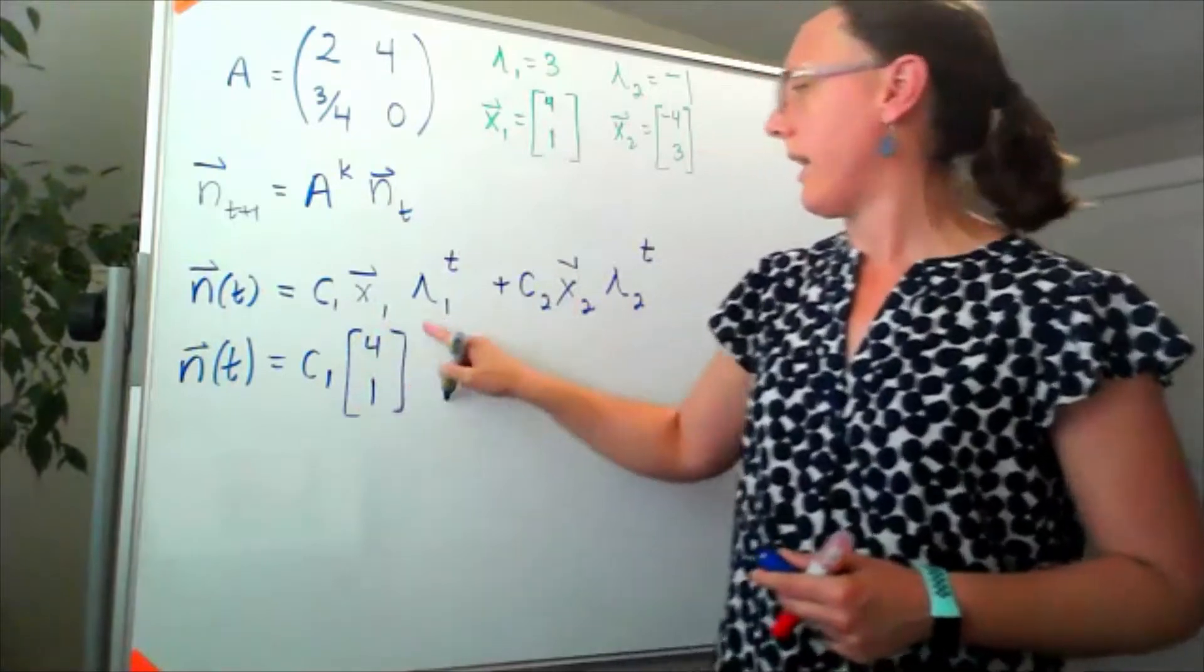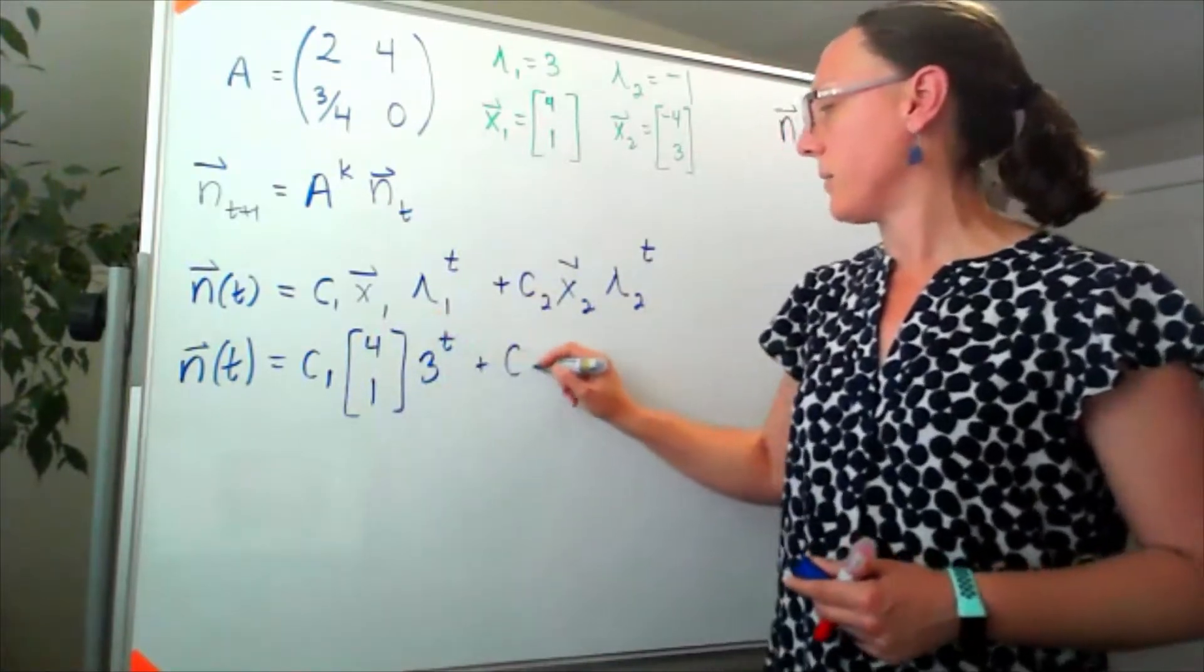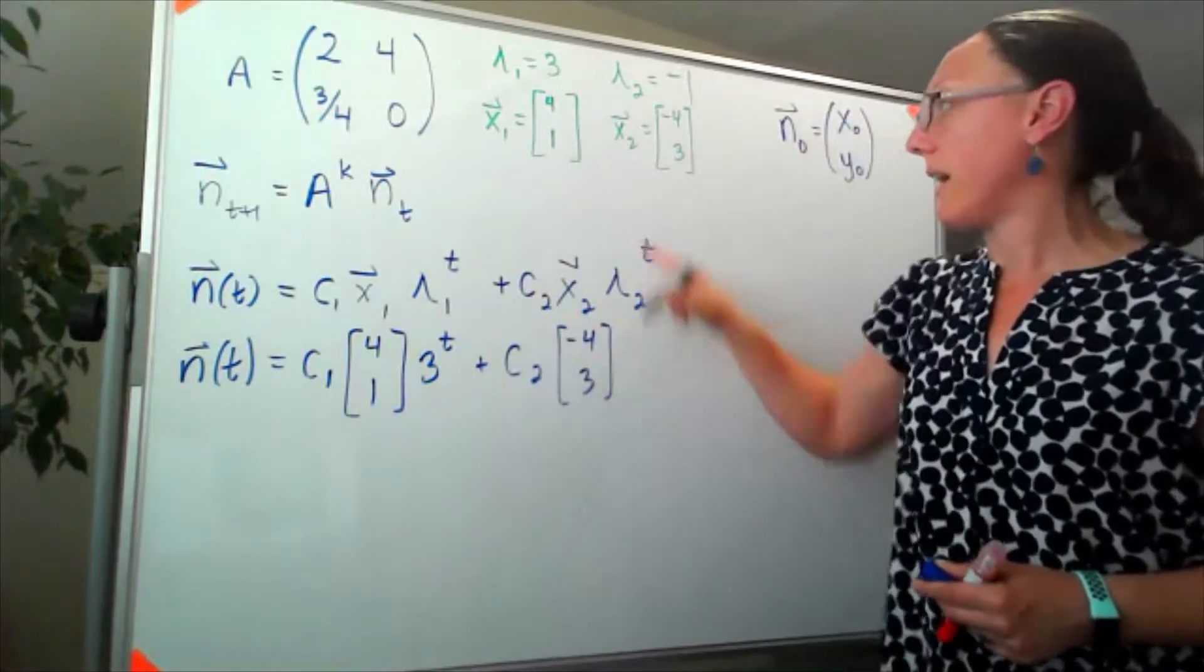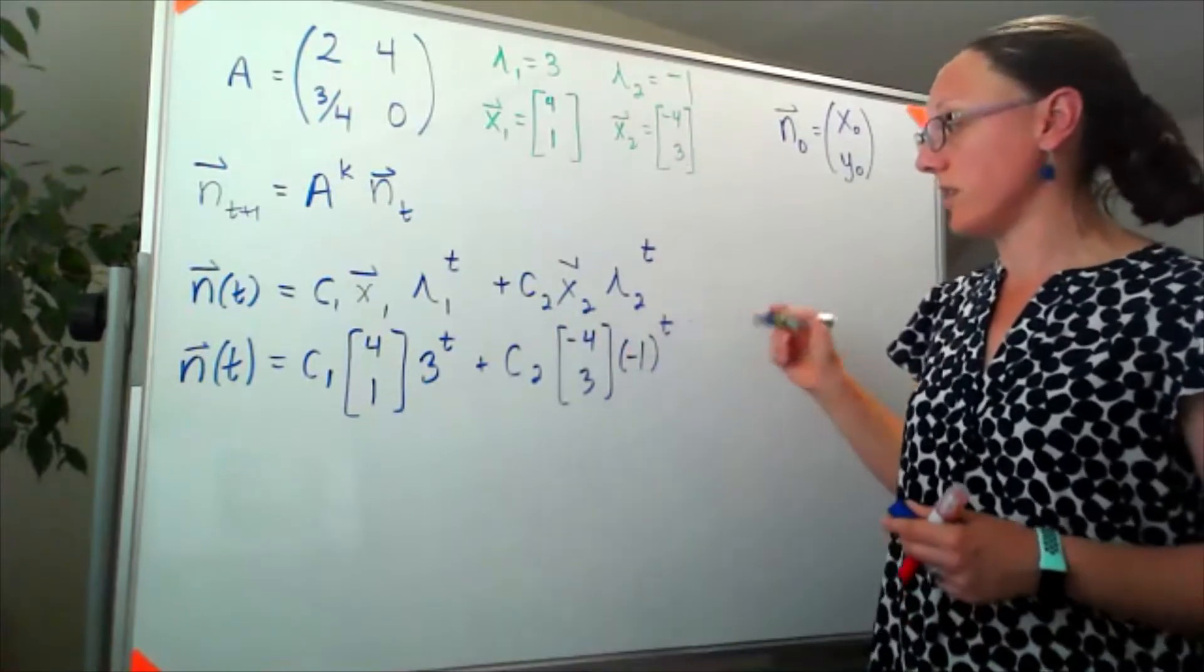Our second eigenvector is negative 4,3 and our lambda 2 was negative 1, so negative 1 to the t.